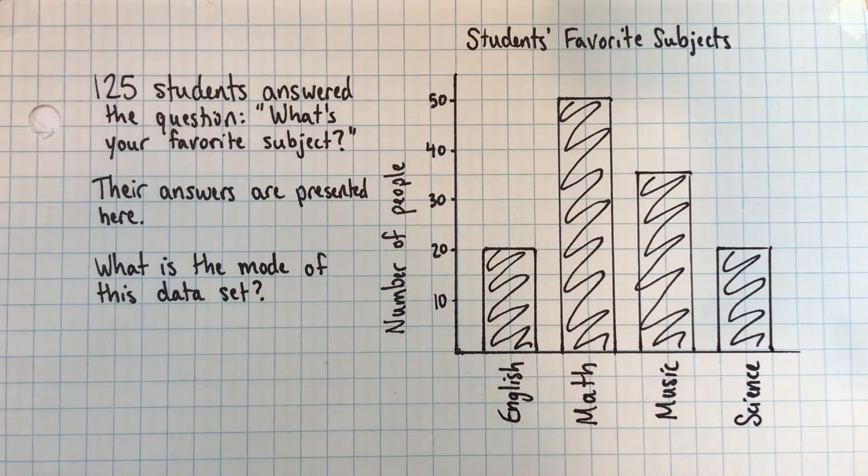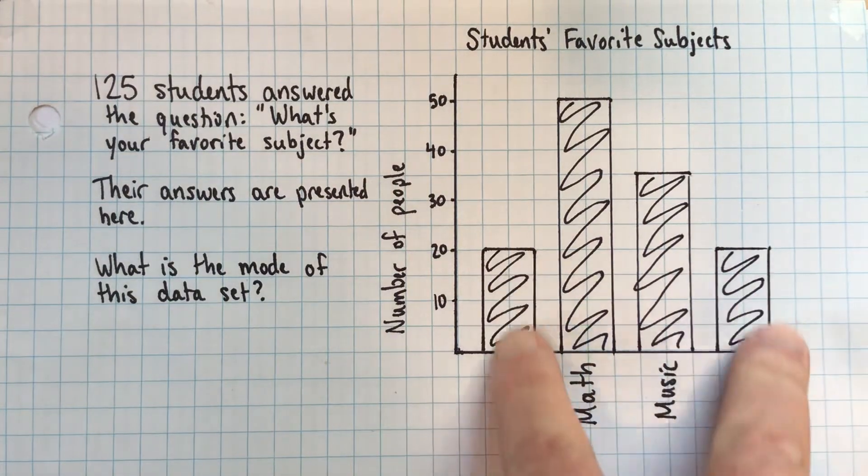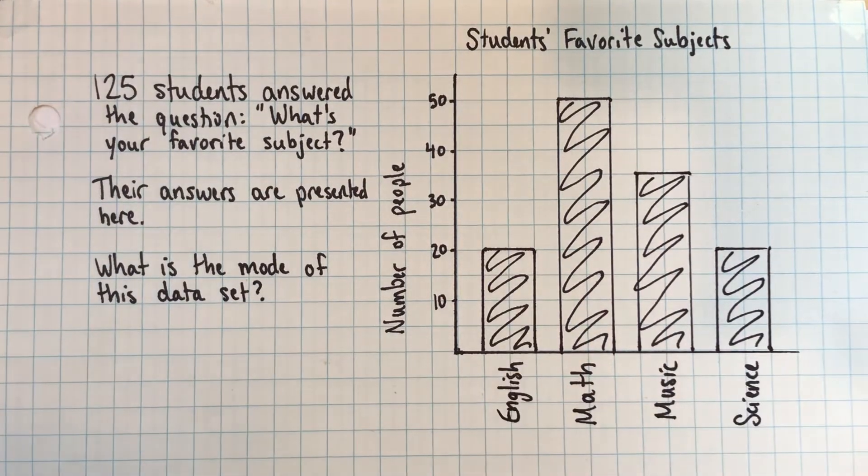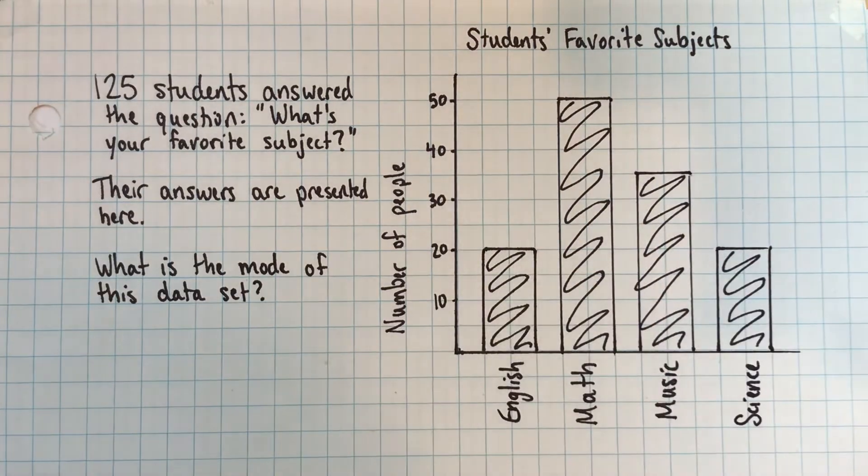But actually it isn't, because 20 is the most common frequency. It has the most number - there are two subjects with 20 people answering that. But that's actually not what we mean when we're asking about the mode of this.